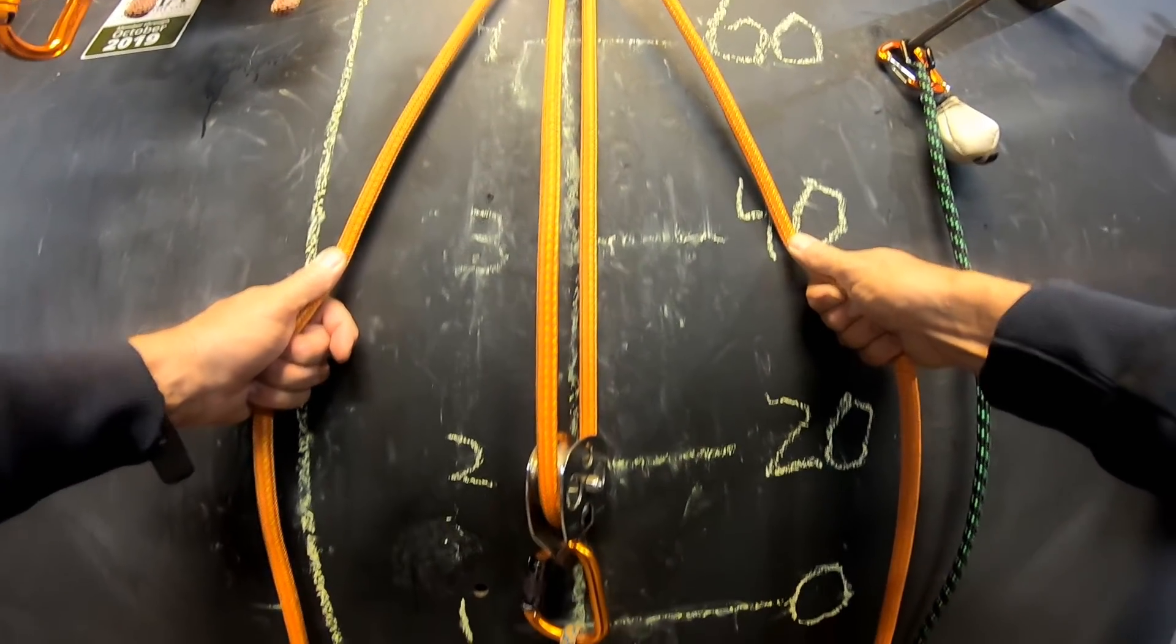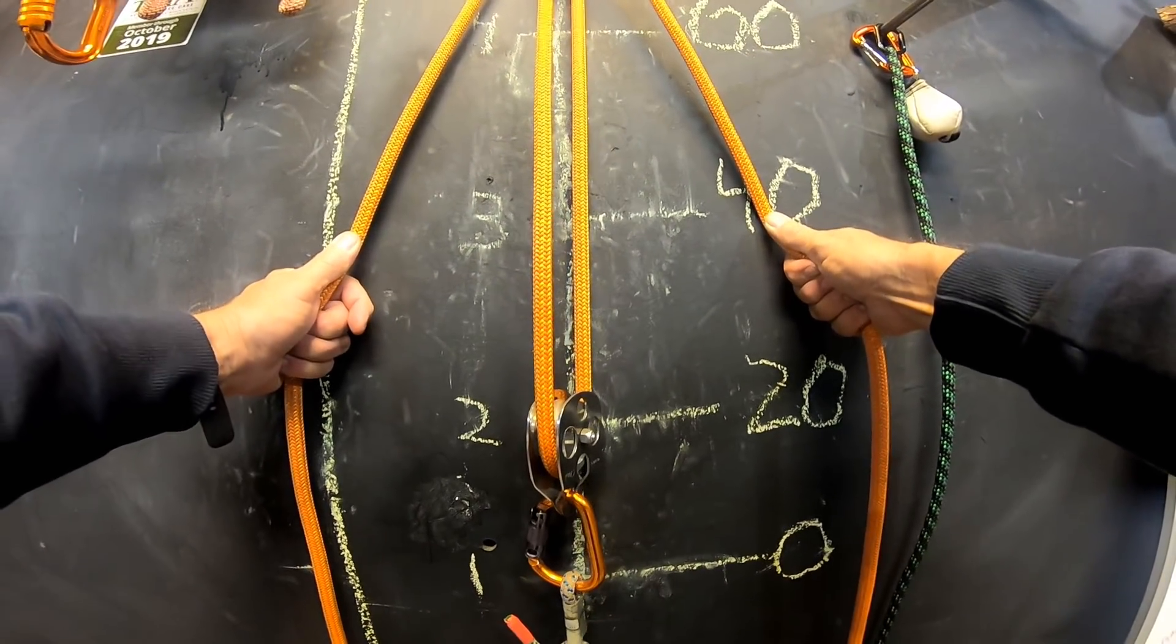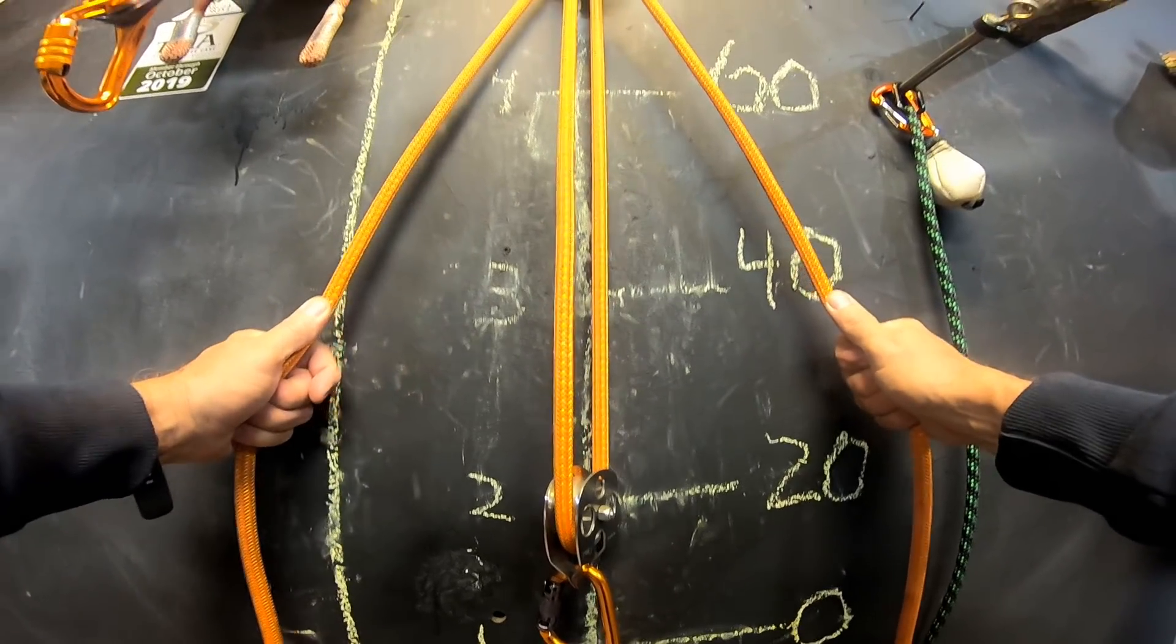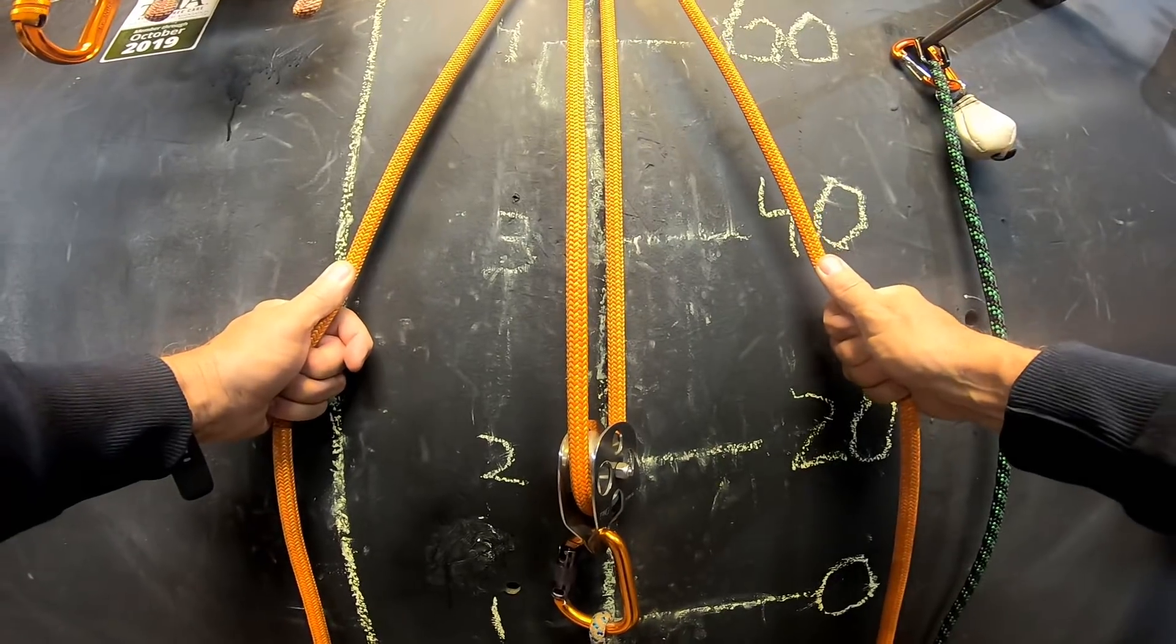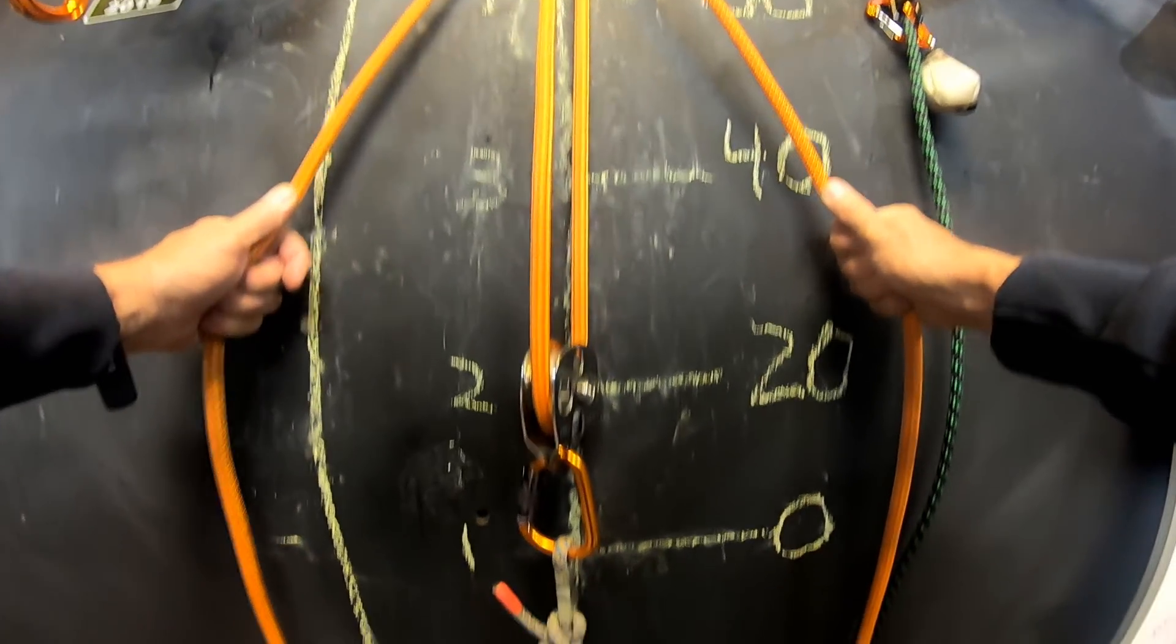I've said many times that pulleys are force multipliers. That means that it can be a multiplication of two. It can be a multiplication of 0.5. It doesn't have to be greater than one. It just is a force multiplier.